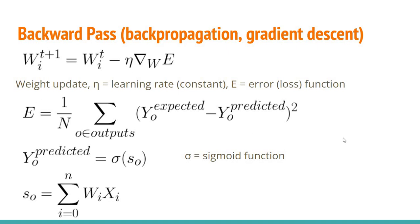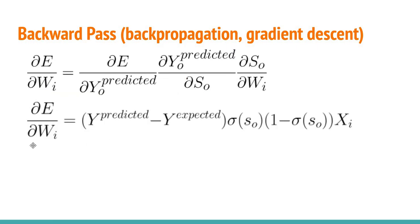So in the case of the mean squared error, the error function looks like this. Here the expected output will be provided while the predicted output is basically the application of the sigmoid function on the output layer. And the sigmoid and the output layer, the SO term here is basically a weighted sum as I showed previously.